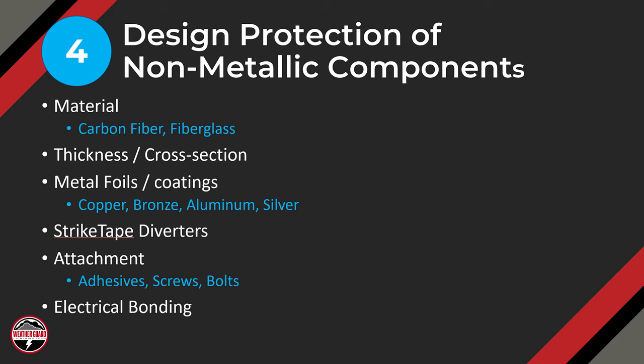We want to determine how to protect the component — there are a lot of choices out there. You need to look up the literature, do some research, ask around, to get an idea of what paths other companies have taken in similar situations. Strike tape diverters — which is our product — applied to aircraft radomes are very common; it just diverts lightning current away and protects the structure. We also need to look at how non-metallic components are attached to the rest of the airplane, whether bolted, screwed, or adhesively bonded, to provide current paths across those joints, including electrical bonding.